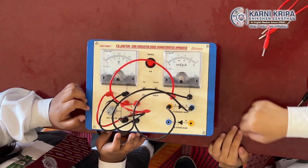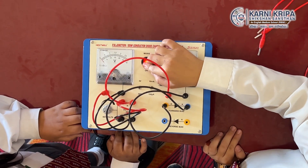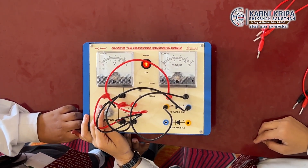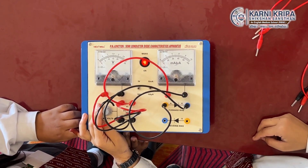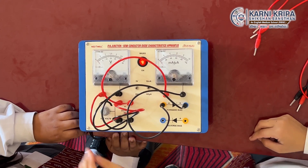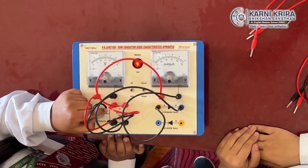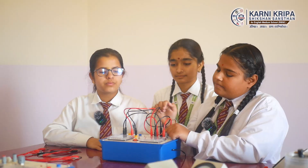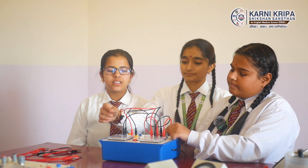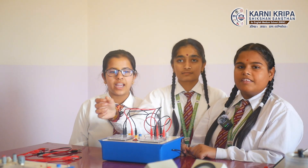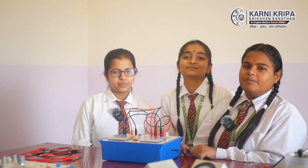Let's turn on the mains. By the help of the rheostat, we will take the reading for forward bias. Here is the reading. Thank you.